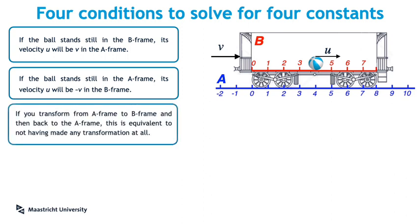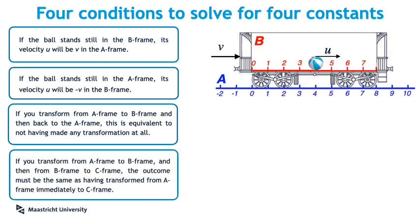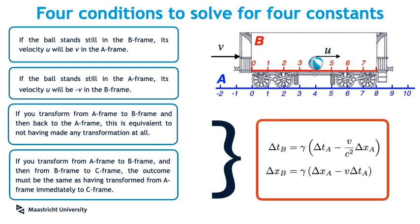Finally, the fourth condition comes from introducing a third inertial system C. If we first use the formulas to jump from A to B, and then again to jump from B to C, the outcome should be the same as if you jumped from A immediately to C. That gives us the fourth condition. How to put this into mathematics can be seen in video 3 or the article or the website. We had our four unknowns, but there were also four conditions, and so we can find the values for the four unknowns gamma, kappa, beta, and sigma. And if you then substitute them back into the linear equations, lo and behold, you end up exactly with the Lorentz transforms that we saw already a few slides ago. In other words, we have found special relativity only by using inertial frames.